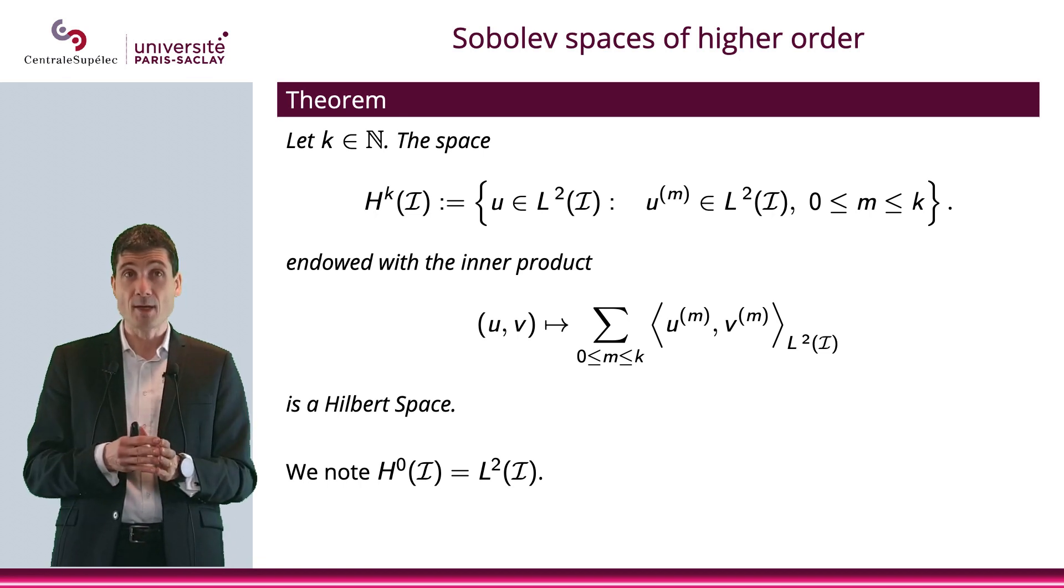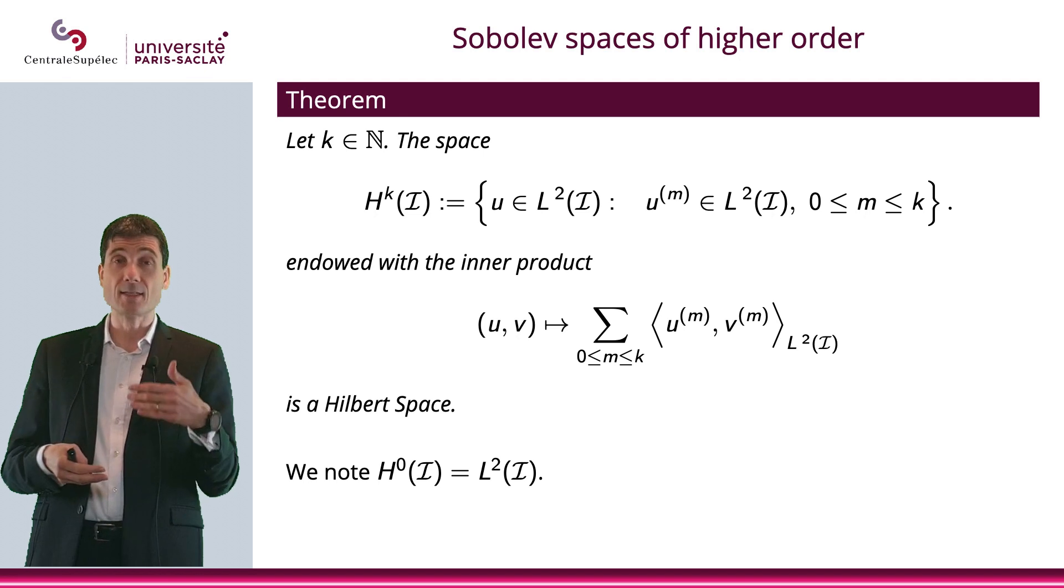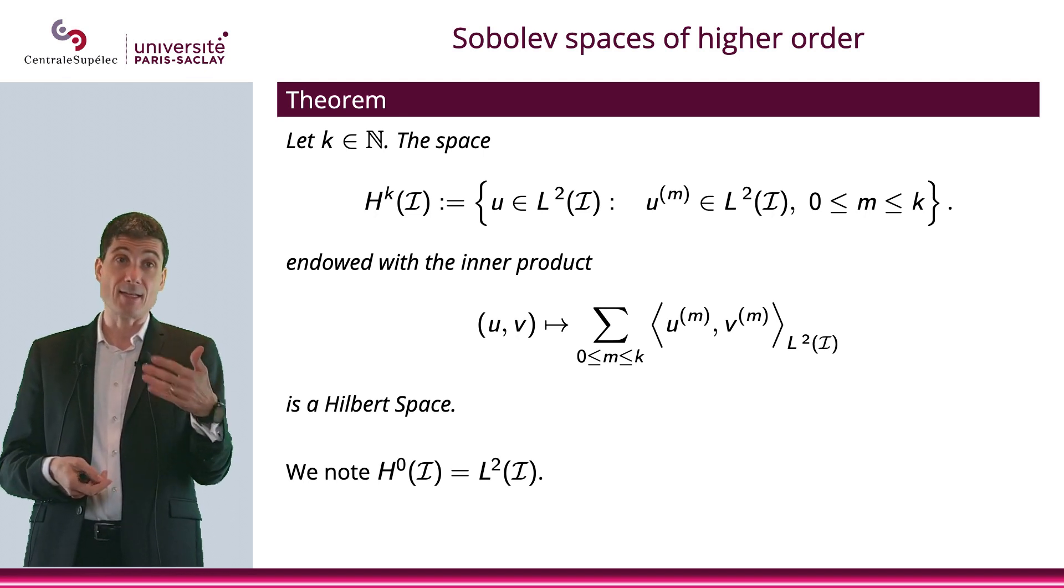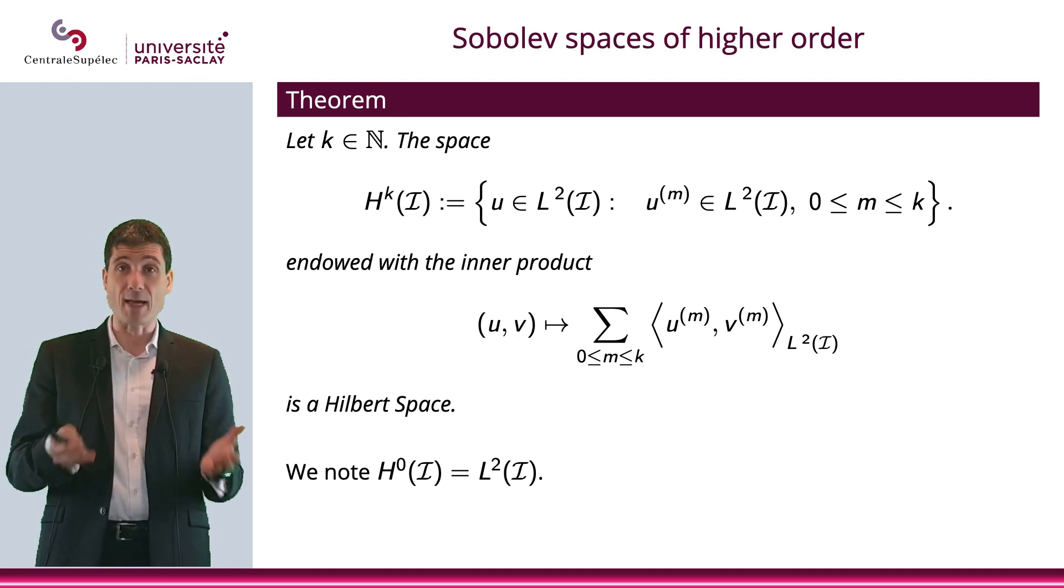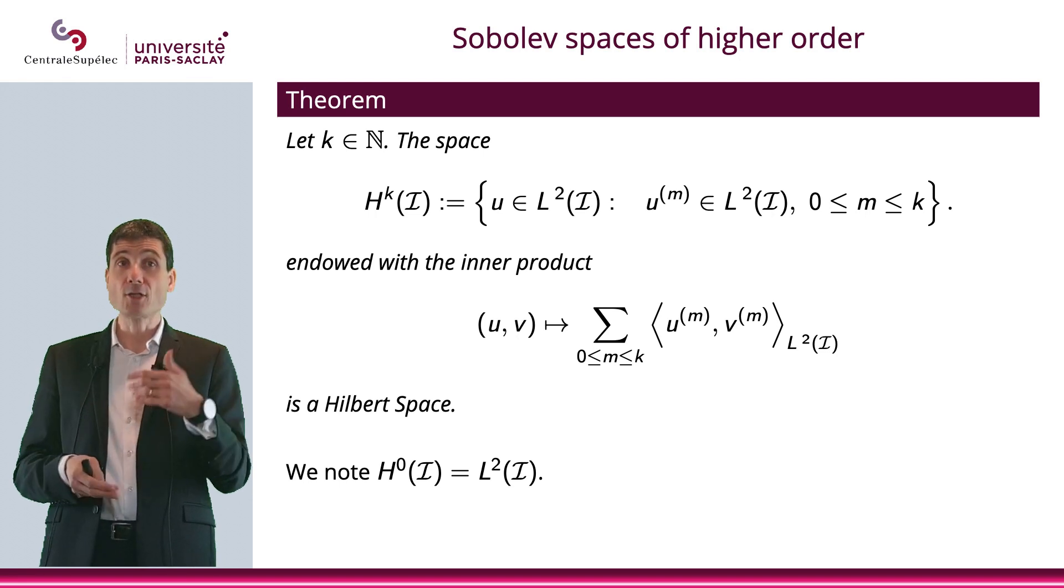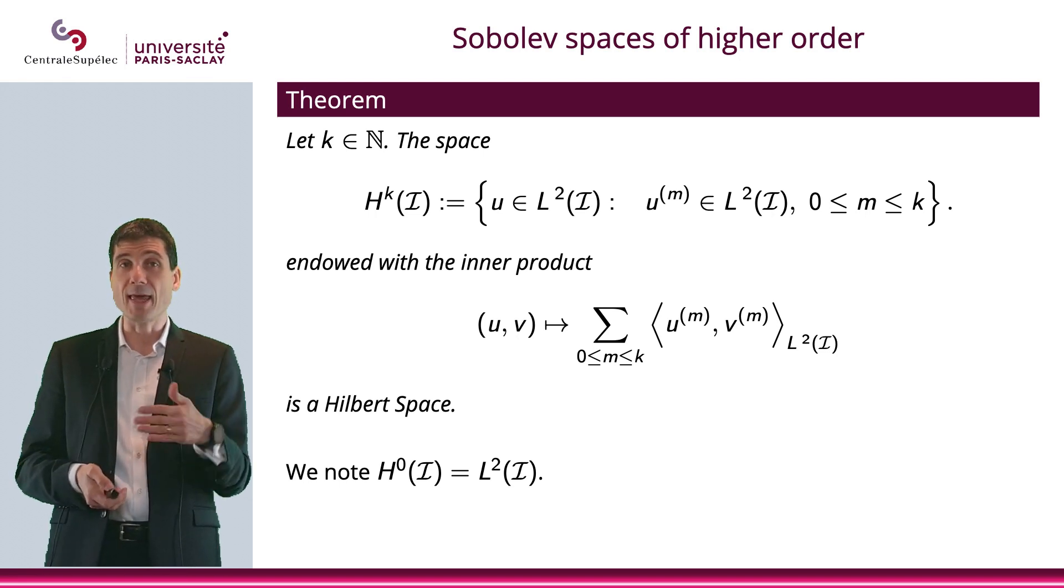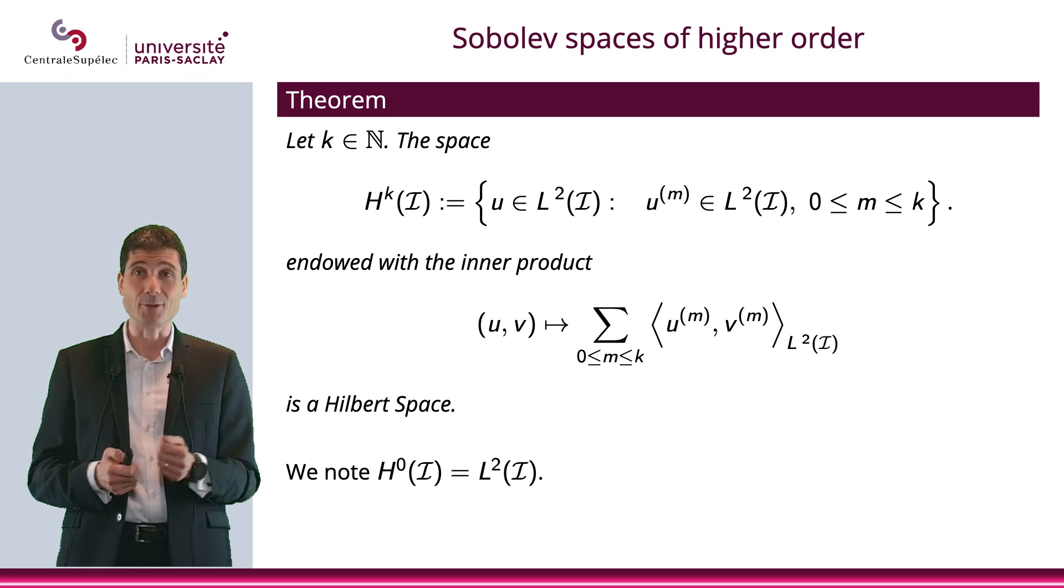And for that norm, H^k is complete, which means that it becomes a Hilbert space. Now, H^0 is simply L^2, and of course will be simply denoted L^2.